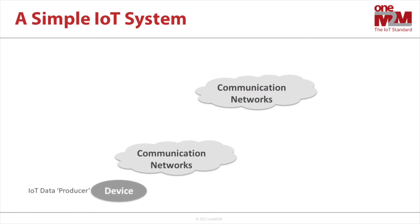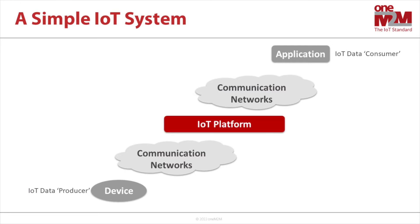At the bottom left we have a device or sensor that produces data. To the top right there's an application that consumes the data. In between there's an IoT platform which contains a set of software tools to manage the devices, the data, and access to them.